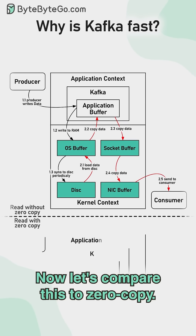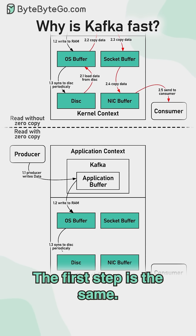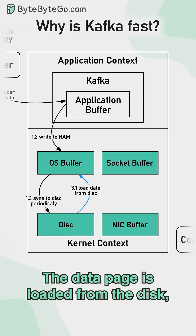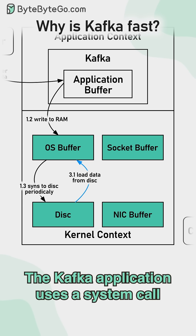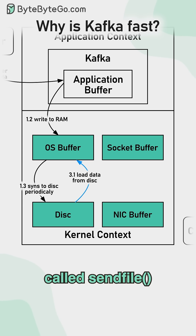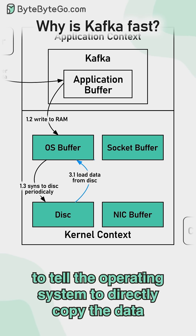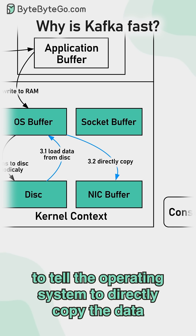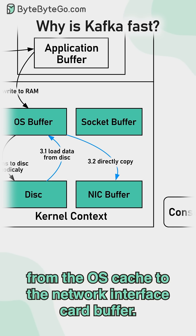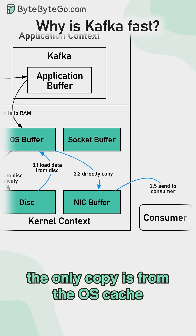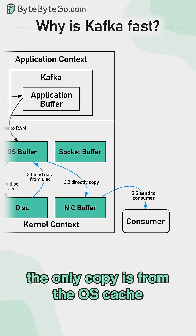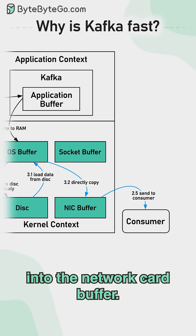Now let's compare this to zero copy. The first step is the same — the data page is loaded from the disk to the OS cache. With zero copy, the Kafka application uses a system call called sendfile to tell the operating system to directly copy the data from the OS cache to the network interface card buffer. In this optimized path, the only copy is from the OS cache into the network card buffer.